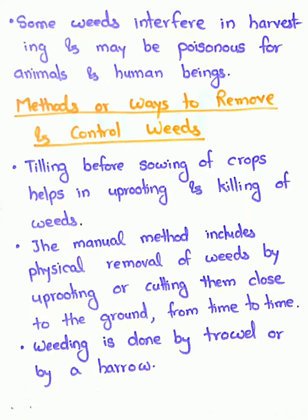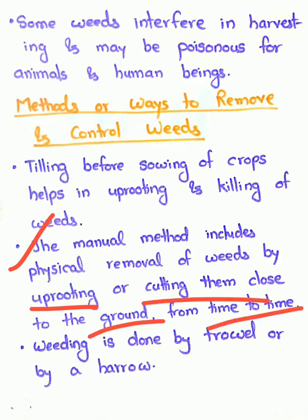The next method is the manual method. The manual method includes physical removal of weeds by uprooting or cutting them close to the ground. In this method, a person physically removes weeds by hand. You can see that many people who work in the fields remove weeds manually, cutting them close to the ground. This is called the manual method of weeding.